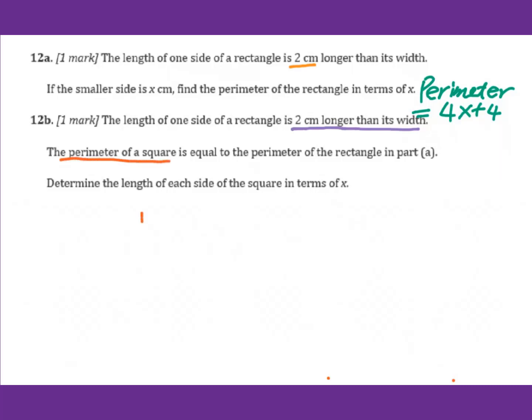Think about the square. Suppose this is all y. Perimeter will be 4y equals 4x plus 4. Then the length of each side of this square means y. We need to figure this y out. So we divide it by 4 for every term. In this equation, you will get y equals x plus 1.